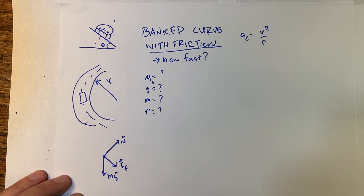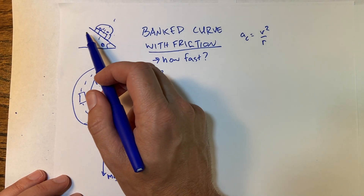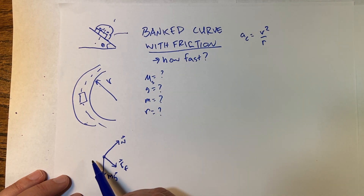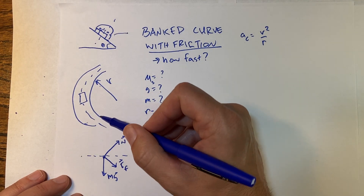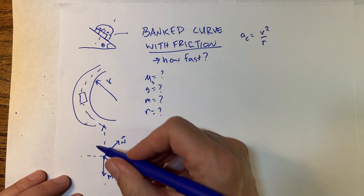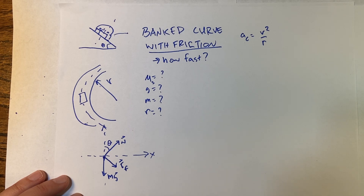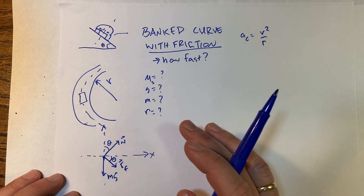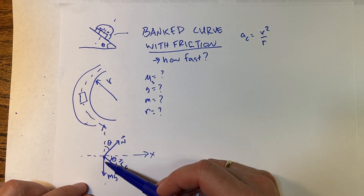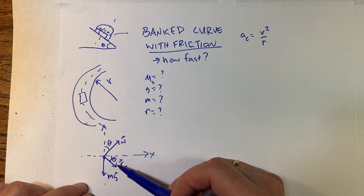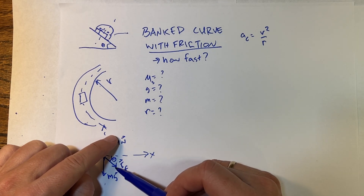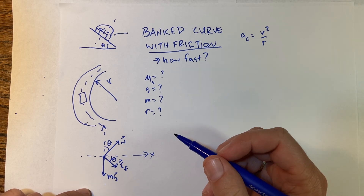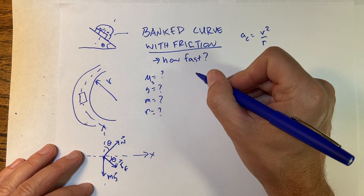Now I need to pick the x and y axes. The car is accelerating towards the center of the circle, so that's going to be my x-axis, and this is my y. Like before, that angle is theta. This angle right here is also theta. The way to think about it: the normal force and the surface direction are perpendicular to each other. As I rotate those two vectors, you can see that's the angle theta.